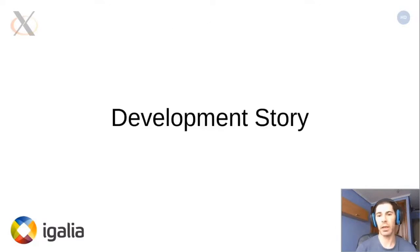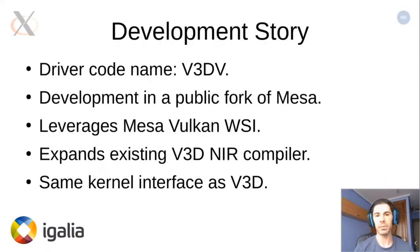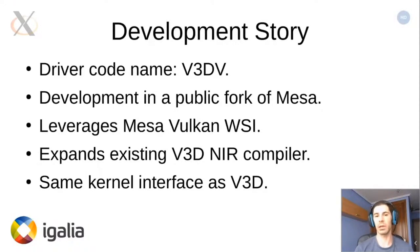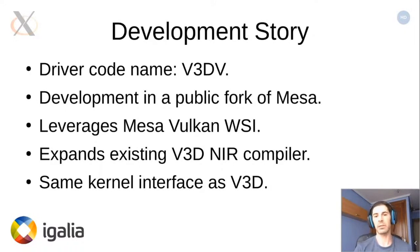The code name for the driver is v3dv — not a very original name. If you're familiar with previous drivers for Raspberry Pi boards, this basically takes the OpenGL driver name and adds a 'v' for Vulkan at the end. We did discuss some more original names in the beginning, but eventually thought this was the best option.